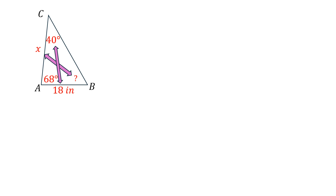We need to figure out the angle opposite x first. Using the fact that the total interior angles of a triangle sum to 180 degrees, we subtract: 180 minus (68 + 40) equals 72 degrees. So the angle opposite the unknown variable x is 72 degrees.